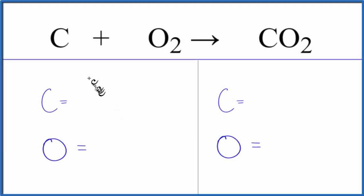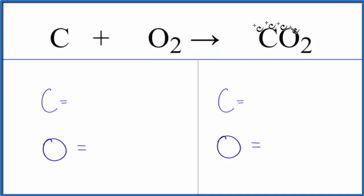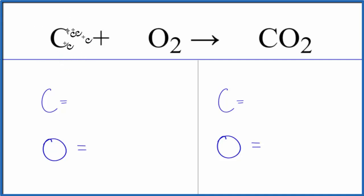In this video, we'll balance the equation for C plus O2 yields CO2. Carbon plus oxygen gas gives carbon dioxide. This is a simple equation, but there's a few things we can learn from it. First of all, if we have just one element, there's nothing written after it — we assume there to be a subscript of one, so we have one carbon atom.